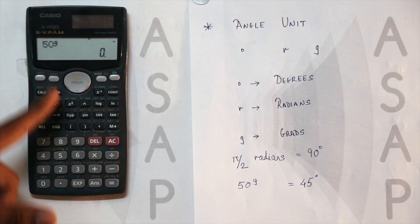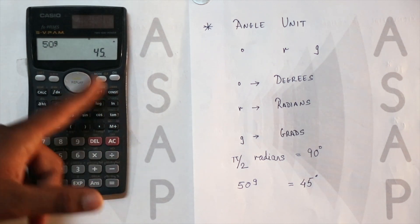Since we are using grads, we choose 3. So 50 grads is equal to 45 degrees.